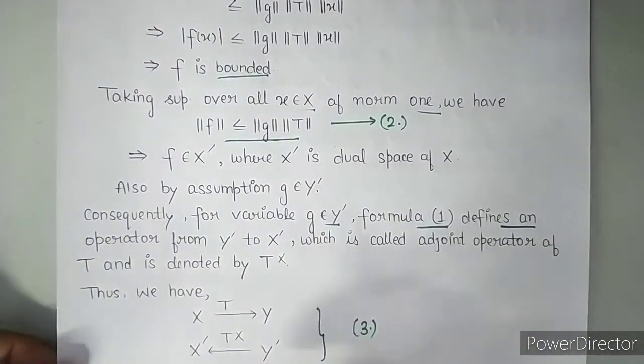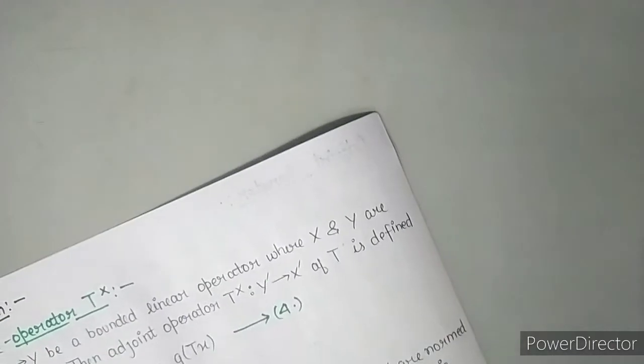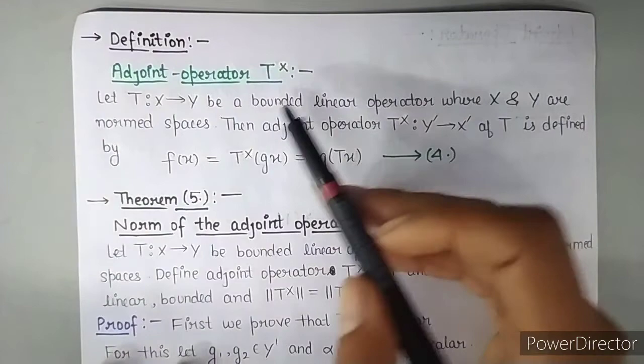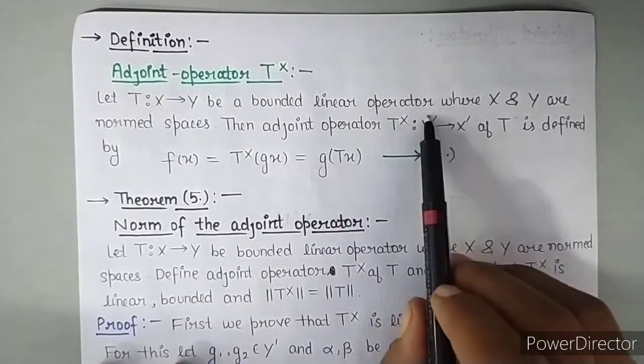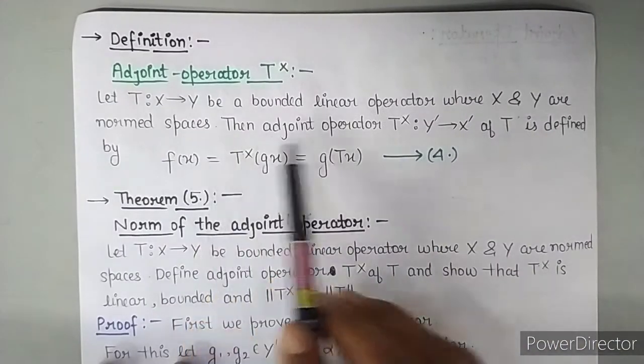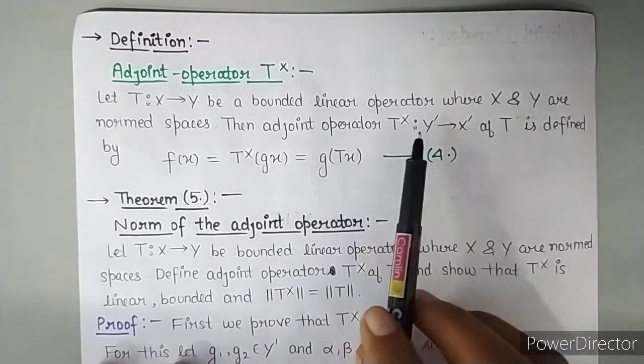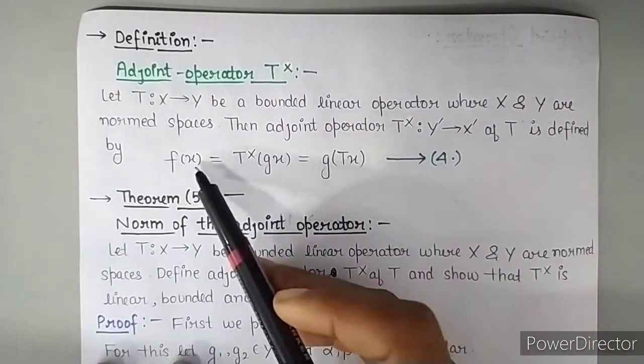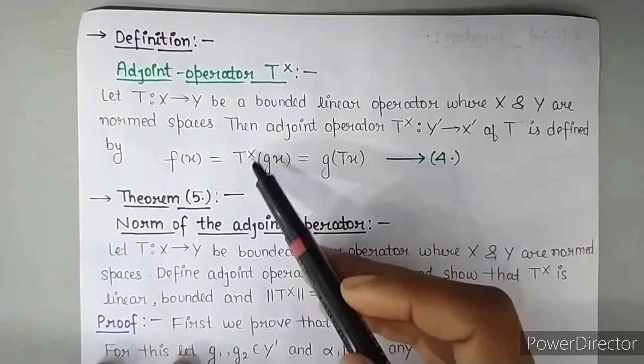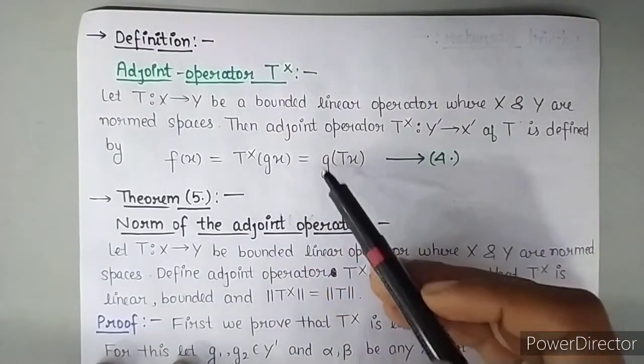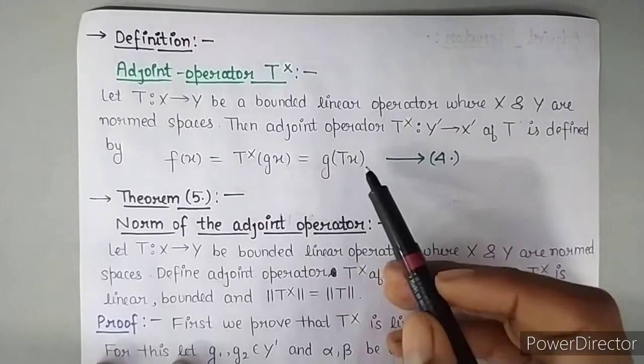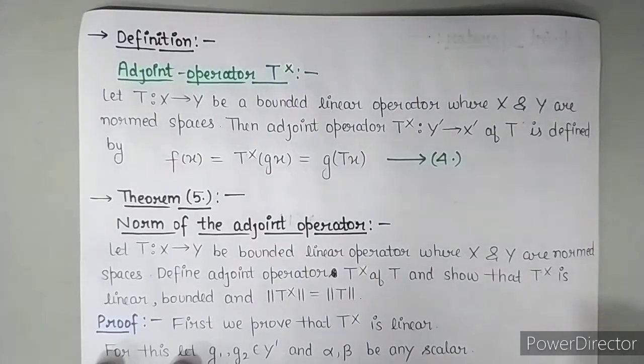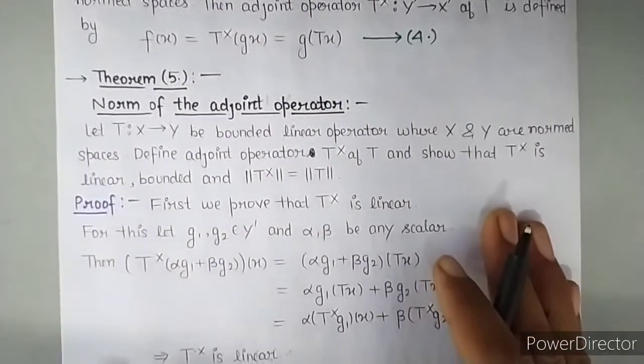Now we will give the definition of exactly what the adjoint is. So far we read the concept. So this is the definition of adjoint operator. Let T from X to Y be a bounded linear operator where X and Y are normed spaces. Then the adjoint operator T star from Y dash to X dash of T is defined by F of X equals T star of G of X, and this is equal to G of TX. We did this from equation number 1. So let's say this be equation number 4. This is our definition.